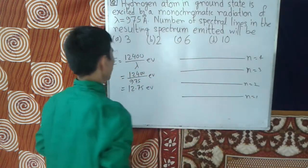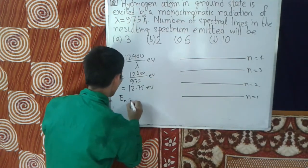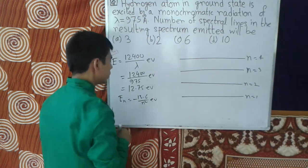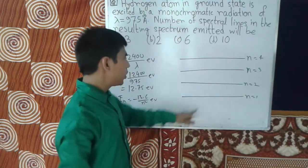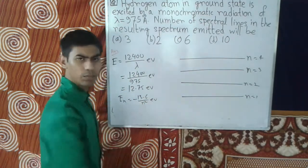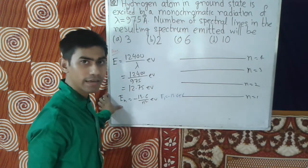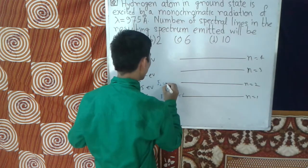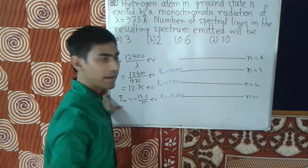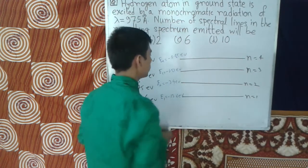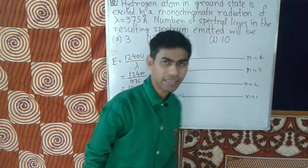We know that the energy of an electron in the hydrogen atom in the nth orbit is En equals minus 13.6 divided by n squared electron volts. For the ground state, E1 equals minus 13.6 electron volts. Similarly, E2 equals minus 3.4 electron volts, E3 equals minus 1.51 electron volts, and E4 equals minus 0.85 electron volts.